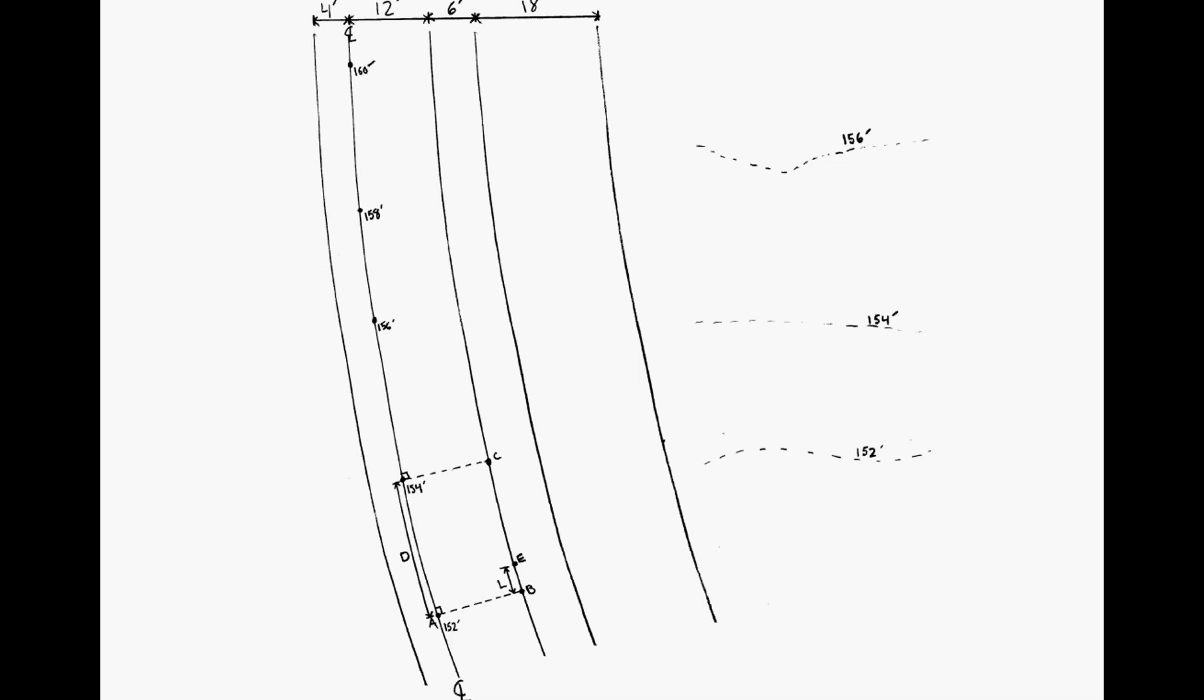Zooming out a little bit, we have our 16-foot wide pavement—four feet to the left of the center line, 12 feet on the right. We have a six-foot wide shoulder and then an 18-foot ditch. Beyond that 4:1 slope of the ditch, there's the back slope which needs to tie into the existing ground.